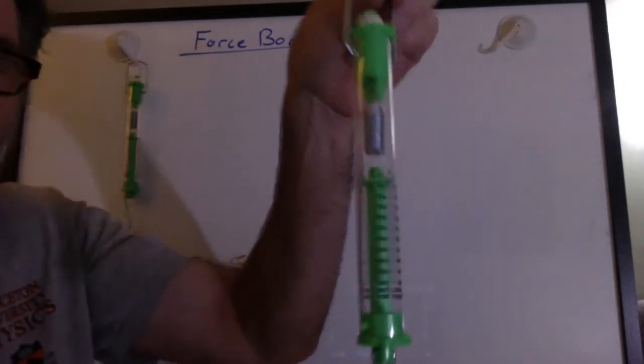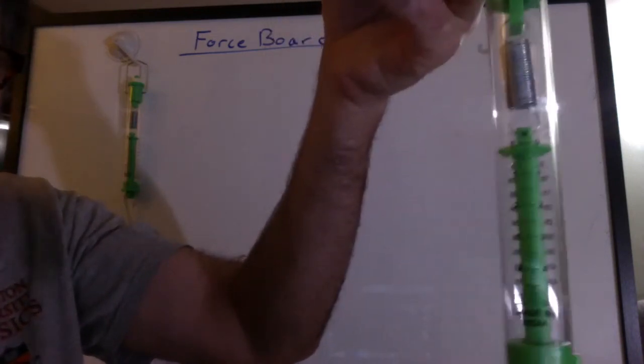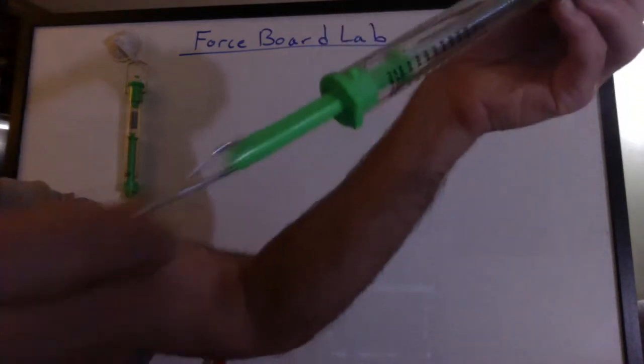Here's one of the spring scales. One side reads grams and the other side reads newtons. I want you to use it so you can read the newtons. You see there's a plastic plunger that comes down through here.